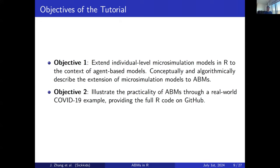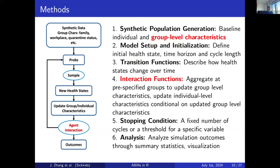When it comes to our tutorial objectives: the first objective is to extend the individual-level micro-simulation model in R to the context of agent-based models — we conceptually and algorithmically describe the extension of micro-simulation models to ABM. The second objective is to illustrate a real-world scenario of ABM using a COVID-19 example, and we provide the full R code on GitHub. Now here comes the main part where we step-by-step conceptually describe how the ABM works.